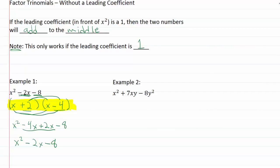So let's go ahead and take a look at example two. So in example two we've got x squared plus seven x y minus eight y squared. So we've got a one as the coefficient of our x squared again. So now we can go ahead and use our shortcut.